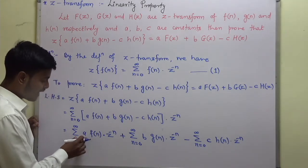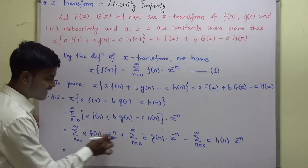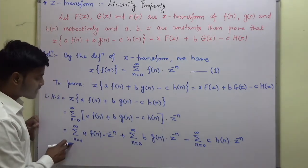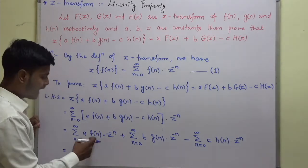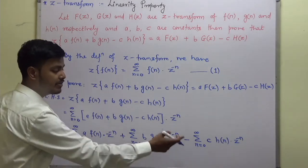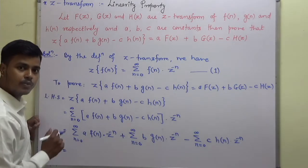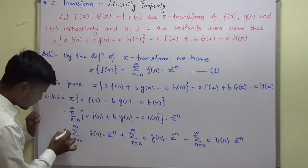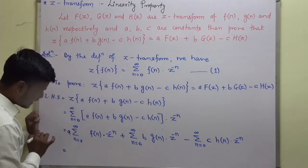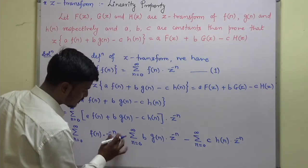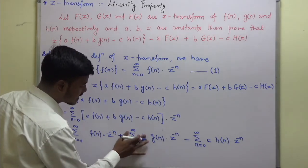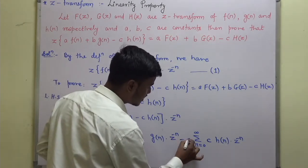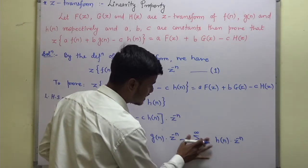Since the summation runs over N and A, B, C are constants, I can take A, B, C outside of the summation. So it becomes A times the first summation, plus B times the second summation, minus C times the third summation.